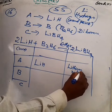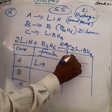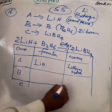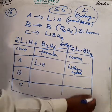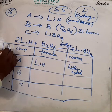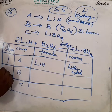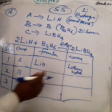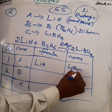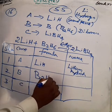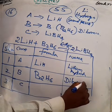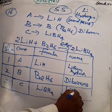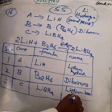The table has columns: serial number, compound, formula, and name. Serial number 1, compound A — formula LiH, name lithium hydride. Serial number 2, compound B — formula B₂H₆, name diborane. Serial number 3, compound C — formula LiBH₄, name lithium borohydride. This completes question number 16.